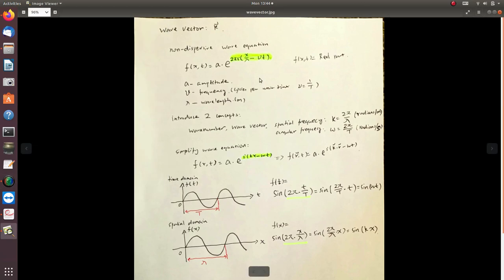So let's talk about the wave vector. The wave equation in its complex form is something like this. So A is amplitude, depending on what kind of electric or magnetic field,